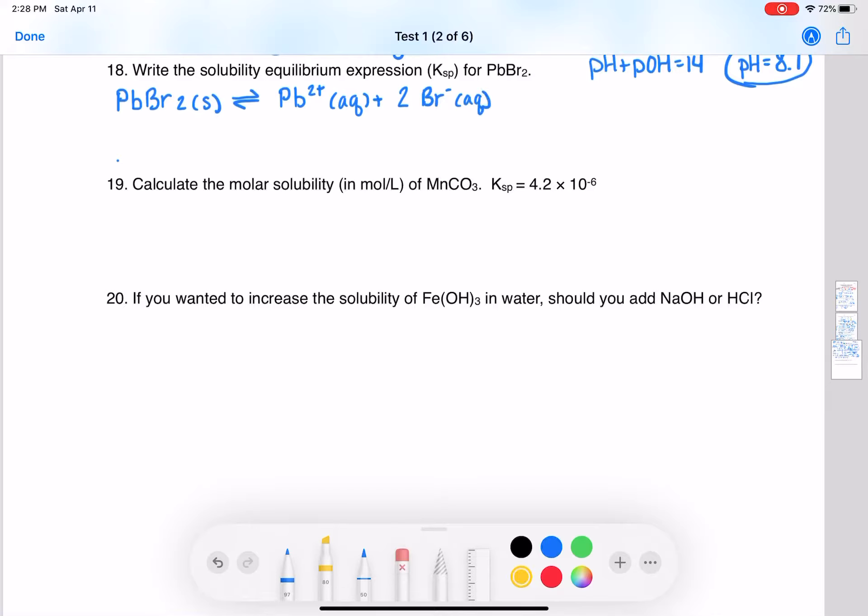Don't forget that the 2 shows up as the quantity of the Br- ions. The Ksp for this is going to be [Pb2+] times [Br-] squared. Everything is raised to the stoichiometric coefficient.